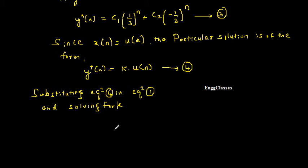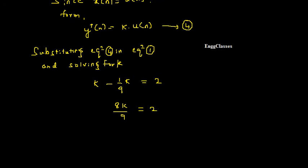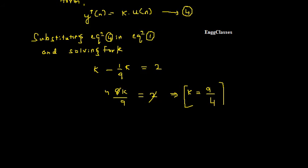Substituting y_p[n] = K·u[n] into equation 1: K·u[n] - (1/9)K·u[n-1] = 2x[n-1]. Since u[n]=1 and u[n-1]=1 for n≥1, we get K - (1/9)K = 2, so (8K/9) = 2, therefore K = 9/4.